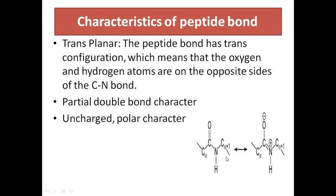This peptide bond always assumes a trans conformation. In trans conformation, the Cα atoms will be on the opposite sides of the peptide bond — the successive Cα atoms will be on opposite sides of the peptide bond joining them. In cis conformation, the alpha atoms will be on the same side of the peptide bond, which is less stable than trans conformation because of steric interference between neighboring side chains. That is the reason why the peptide bond is always transplanar in nature.